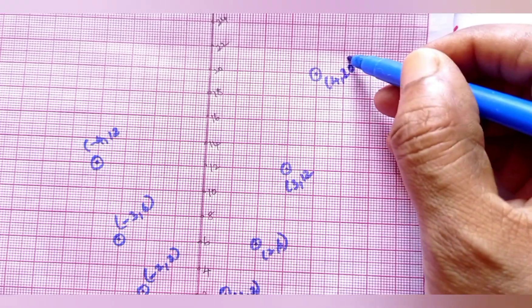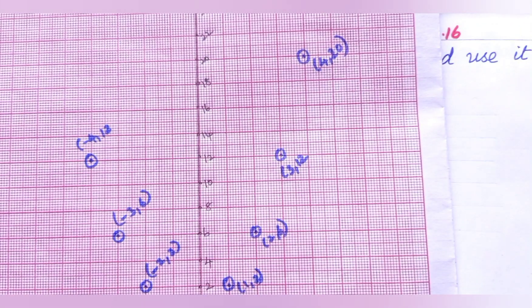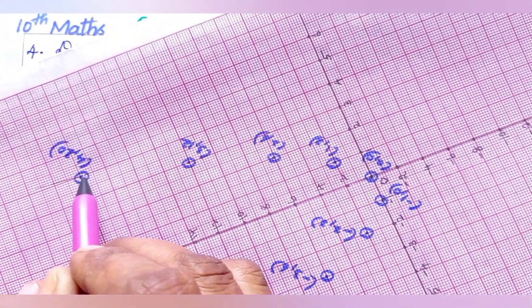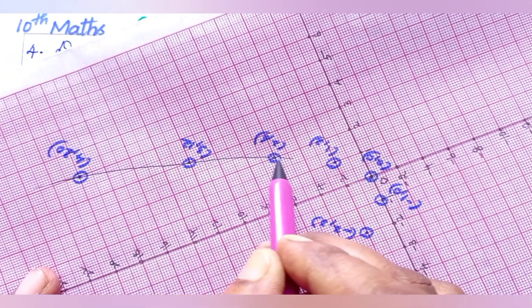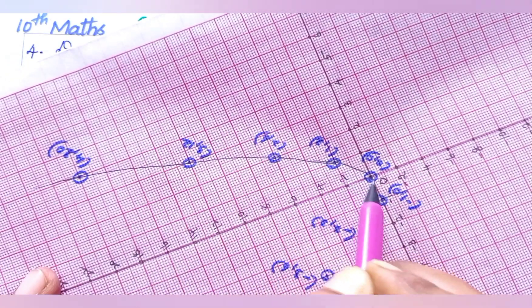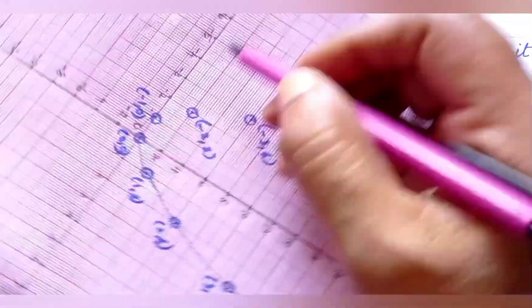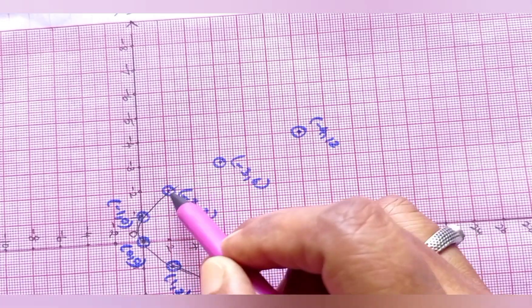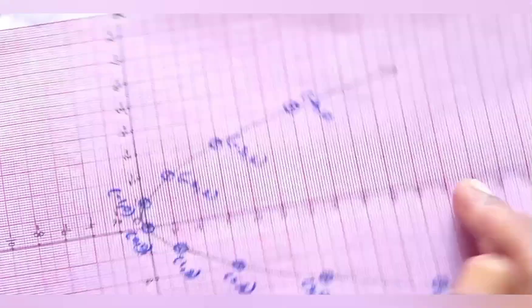Now we are going to join these points by a smooth curve. Connect the points with a curved line — we got a parabola.